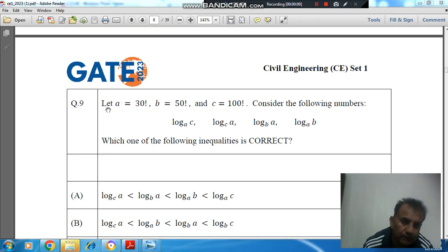Question number 9 is: Let A = 30 factorial, B = 50 factorial, and C = 100 factorial. Consider the following numbers: log base A of C, log base C of A, log base B of A, log base A of B.